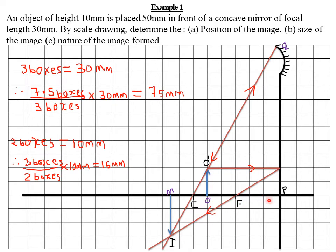Horizontally, one box represents 10 millimeters. Counting from the pole to the image position, I get 7.5 boxes. Since three boxes represent 30 millimeters, for 7.5 boxes: (7.5 ÷ 3) × 30 mm = 75 millimeters. Alternatively, with each box representing 10 millimeters, counting gives 10, 20, 30, 40, 50, 60, 70, 75 millimeters. So the position of the image is 75 millimeters from the mirror.